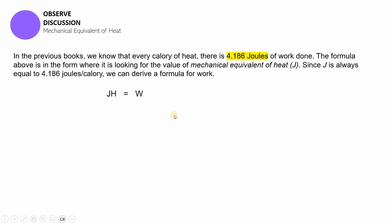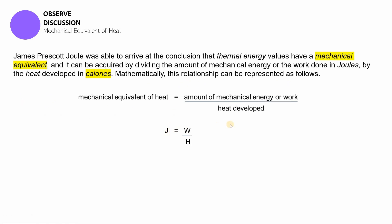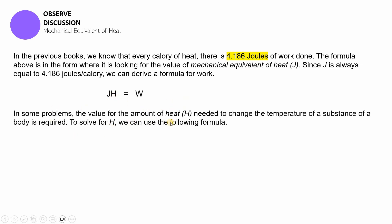Applying this in previous books, we know that for every calorie of heat we have to remember that there are 4.186 joules of work done. The formula is looking for the mechanical equivalent of heat, J. Since J is always equal to 4.186 joules per calorie, we can derive a formula for work by cross multiplication, and then we're gonna get W is equal to J multiplied by H.